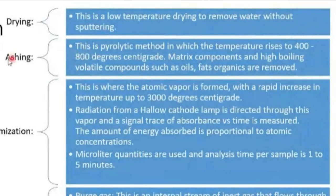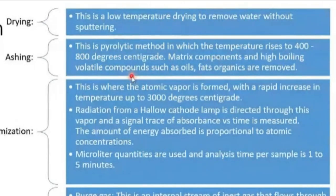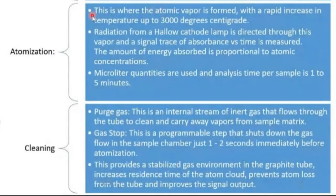Then comes ashing (pyrolysis): the temperature rises to 400–800°C. Matrix components and high-boiling volatile compounds such as oils, fats, and organics are removed. Organic material including carbon is removed at the ashing stage.